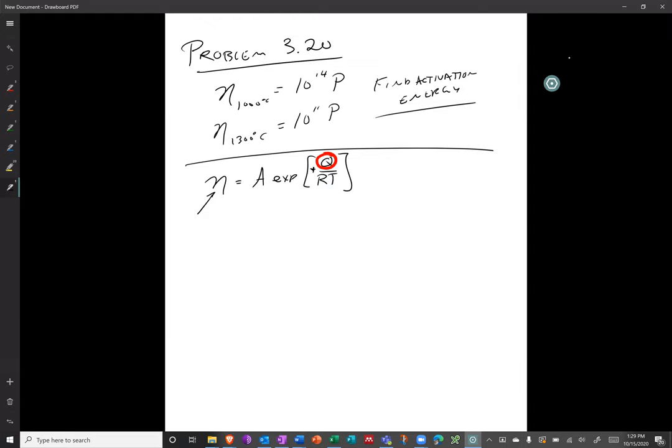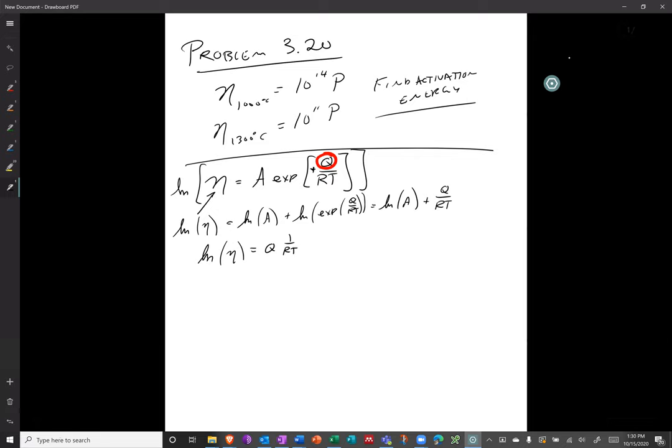We want to separate these out. We'll separate these out by taking the natural log of everything. That gives us the natural log of the viscosity is equal to the natural log of A plus the natural log of the exponential of Q over RT. So that's going to be natural log of A plus Q over RT. And then we can arrange that again to the natural log.